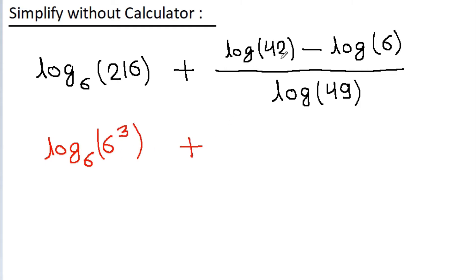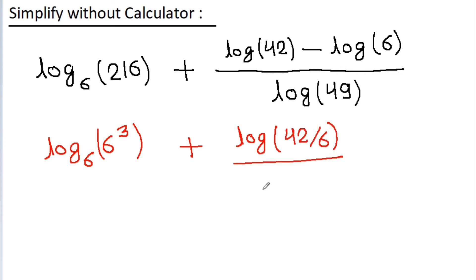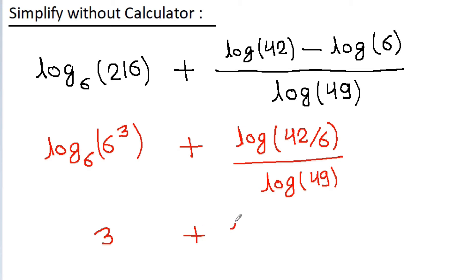Log 42 minus log 6 can be written as log(42/6), divided by log 49. We can write log base 6 of 6 cubed as 3, minus log(42/6) which is log 7, and log 49 can be written as log 7 squared.